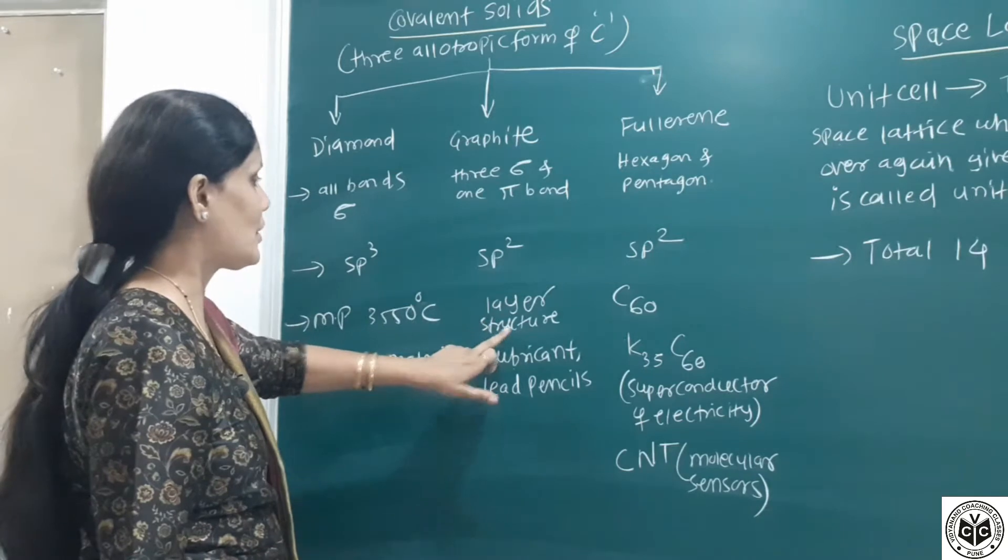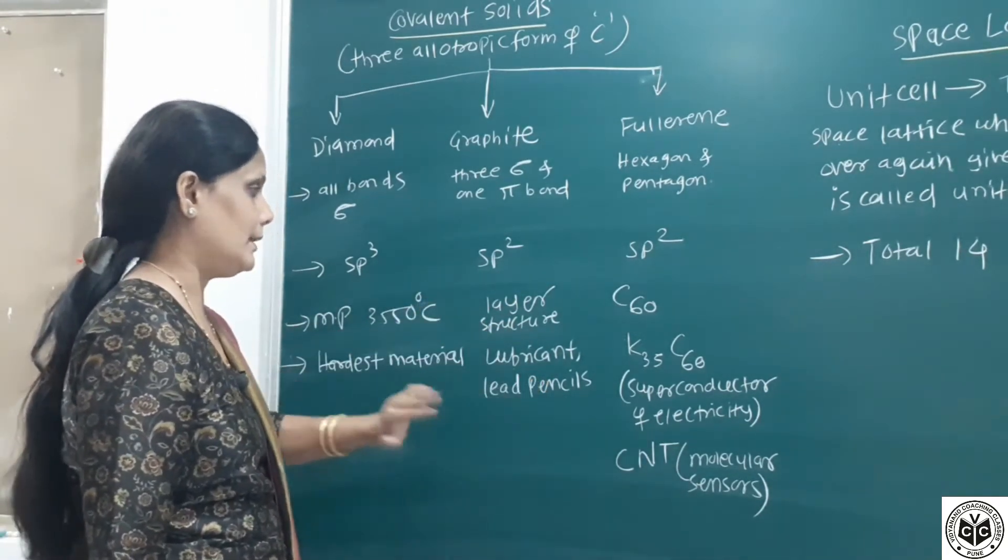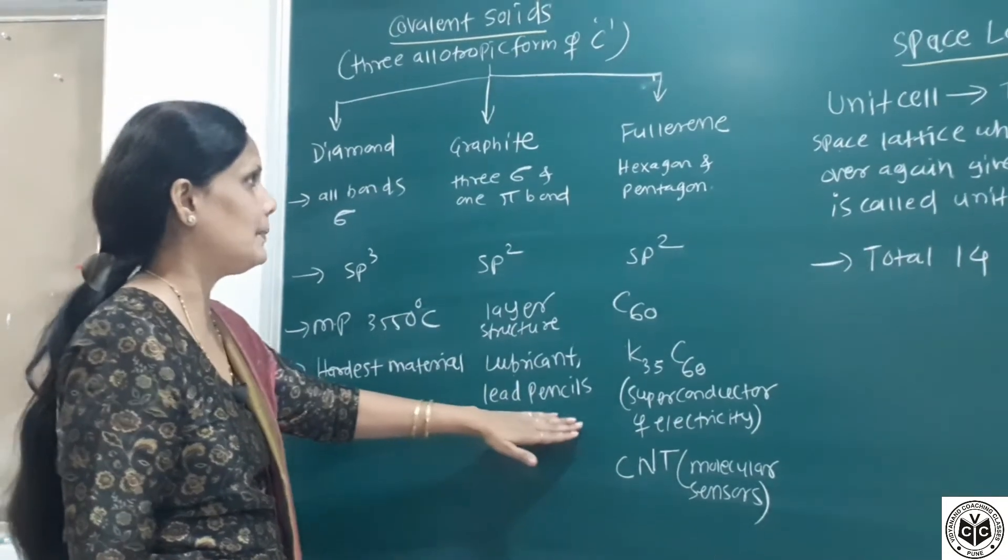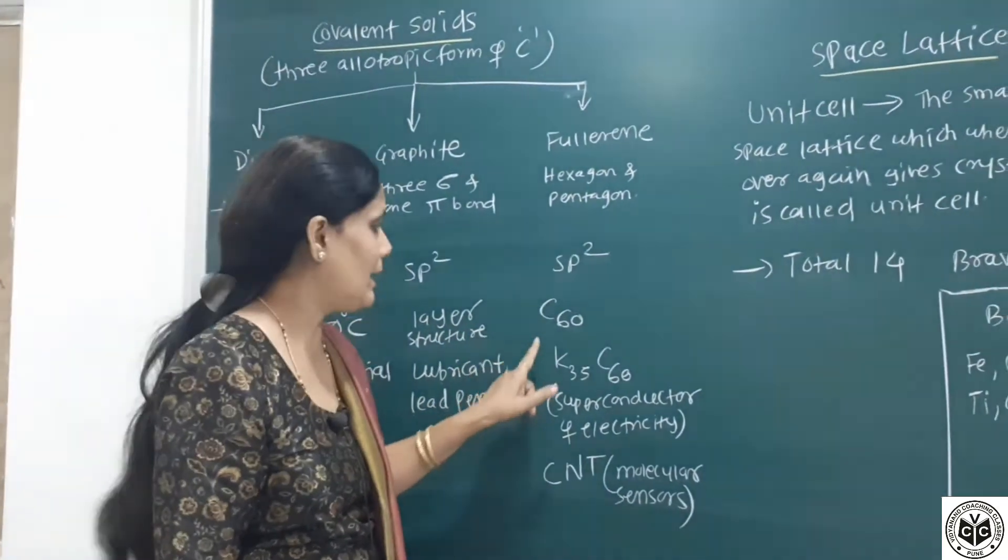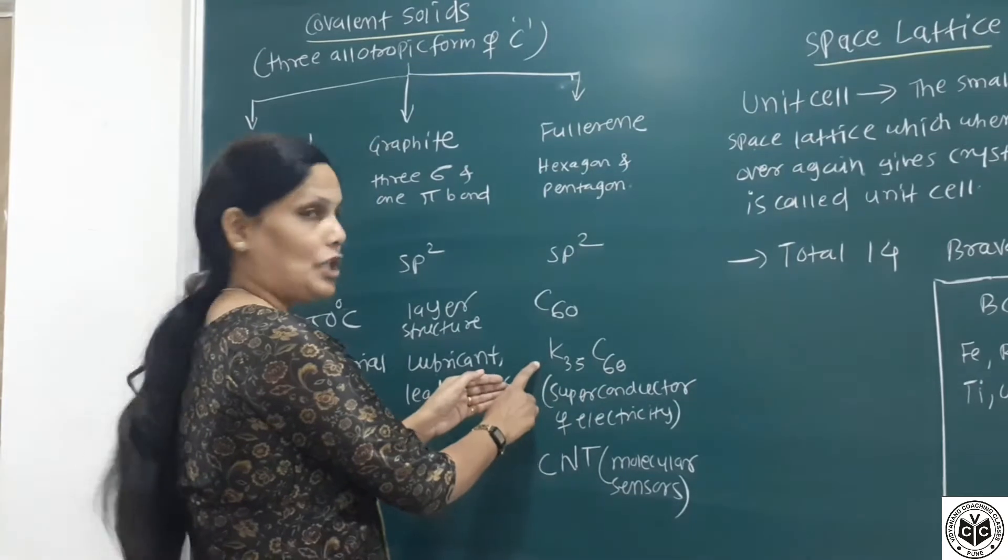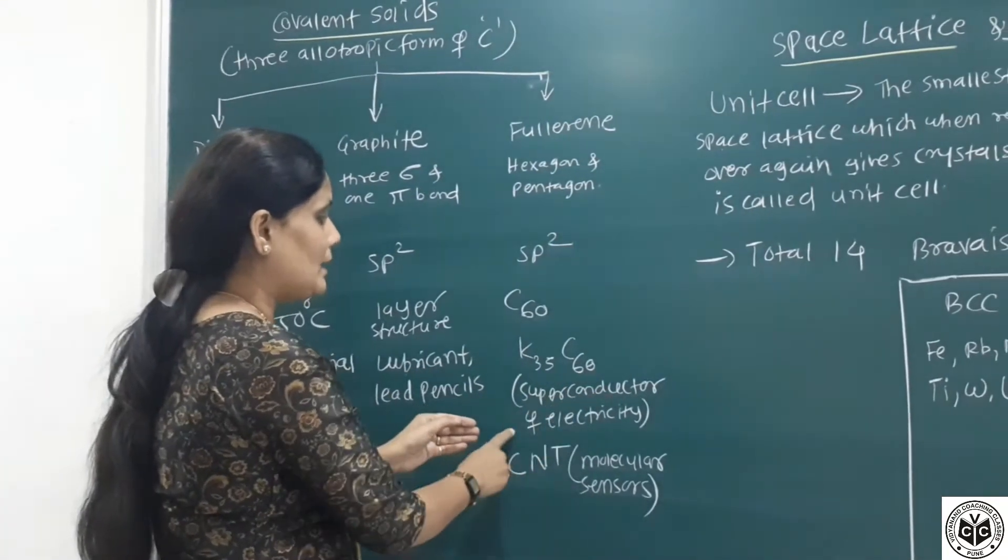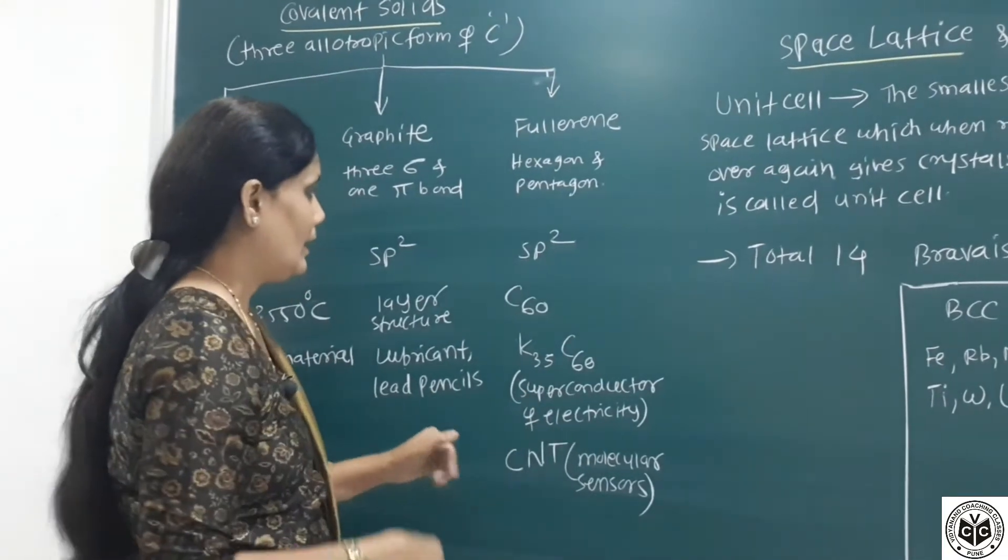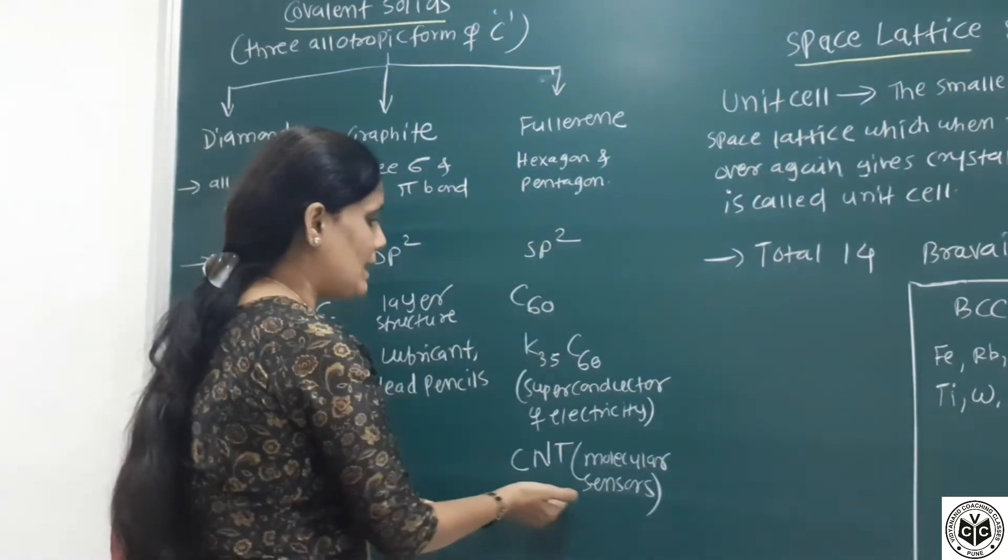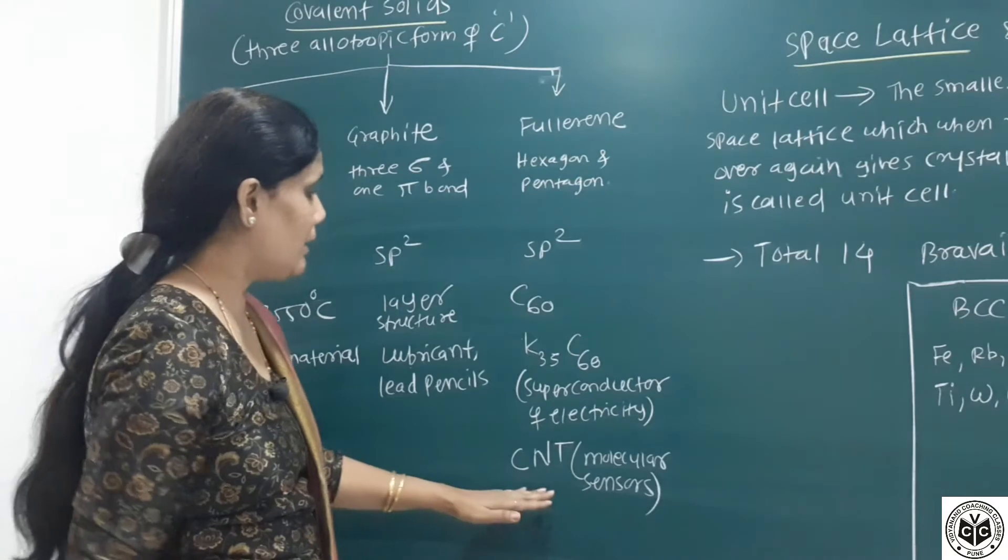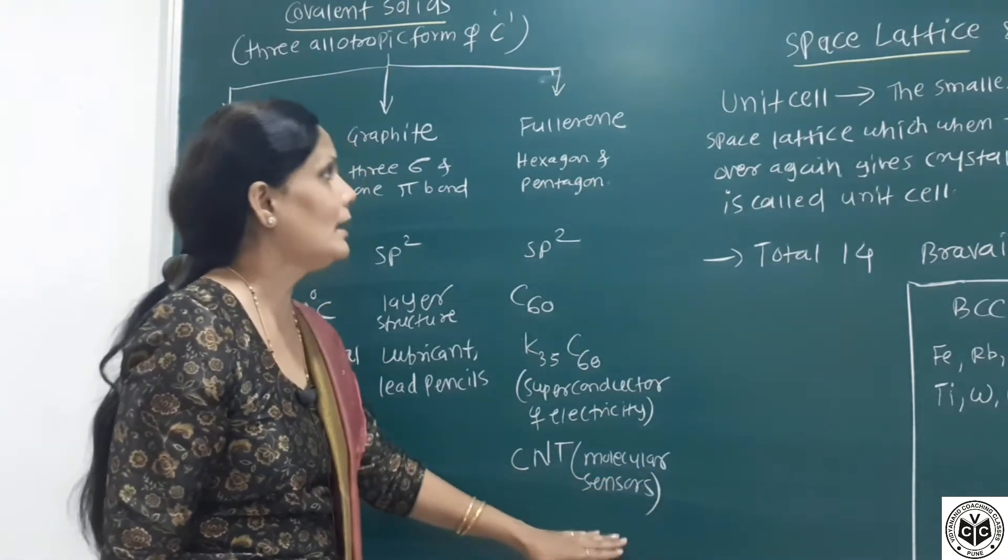Graphite has a layer structure and is used as a lubricant. It is also used in lead pencils. Fullerene has the formula C60 with 60 carbon atoms. When combined with potassium, K3C60 is used as a superconductor of electricity at low temperature. Fullerene can form carbon nanotubes which are used as structural composites and molecular sensors.